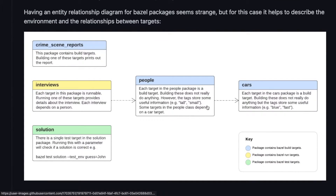We have build targets — we know already about crime scene reports, and we also have people and cars. As you would have in an ordinary software project using Bazel or any other build tool, you have different kinds of targets. These are build targets, kind of like libraries. And then we have a run target, which is like an executable that you can actually run. This executable can depend on other libraries and things — that's what these people and cars are.